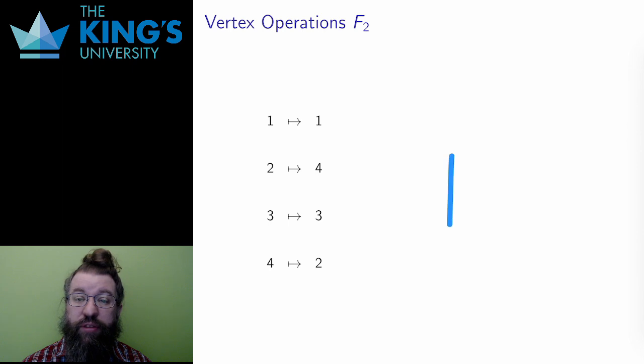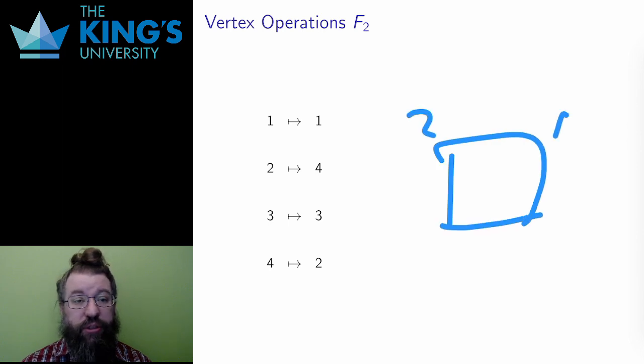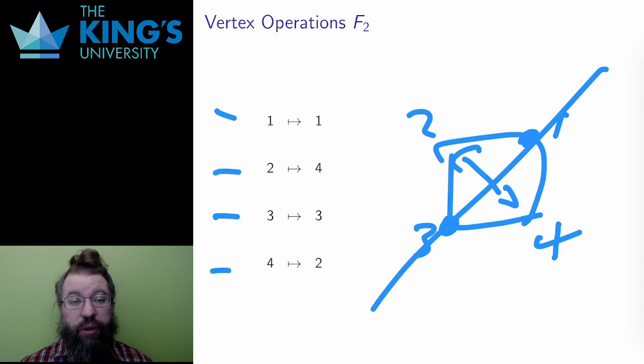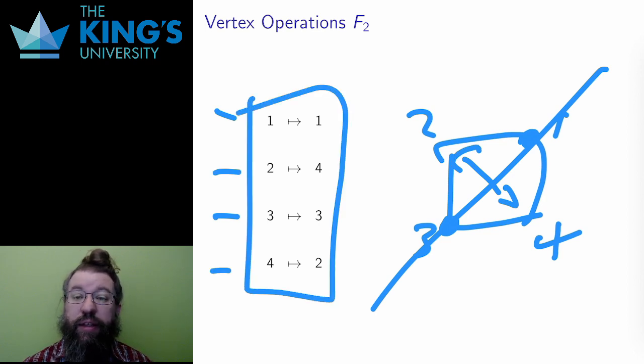F2 was the reflection over this diagonal line. What does it do to the vertices? Well, it keeps 1 and 3 the same, since they are on the line. But then it flips 2 and 4, sending 2 to 4 and 4 to 2. So these are the vertex operations for F2, and everything I need to know about F2 can be boiled down to these operations.